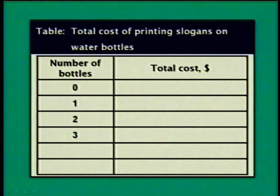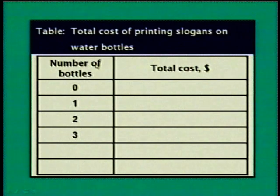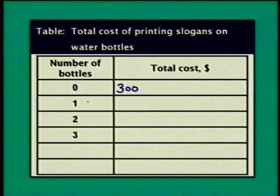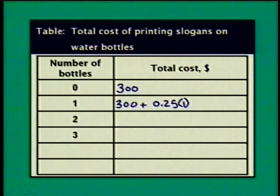Here's our table. As with our graphs, we see that the table has a caption. This table is giving us the total cost of printing slogans on water bottles. We also have column headings. Our first column is the number of bottles, and the second column will be the total cost. If I print the slogan on no bottles, my total cost will just be the $300 for the equipment. If I wanted to print on just one bottle, I still have the equipment cost plus 25 cents per bottle times one bottle, so my total cost is $300 and 25 cents.